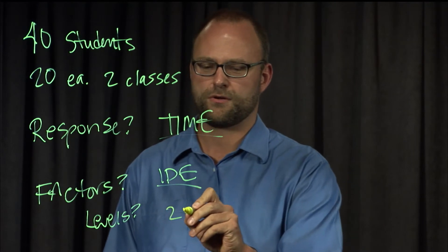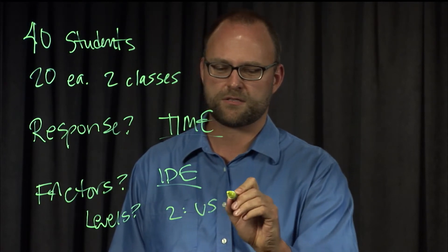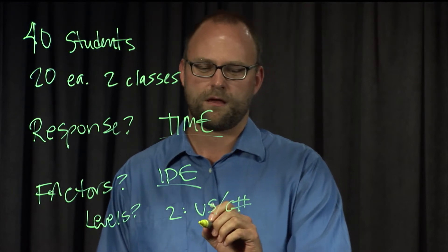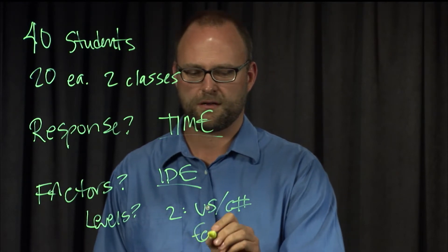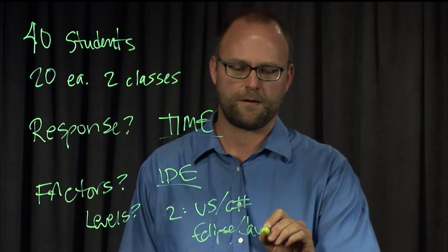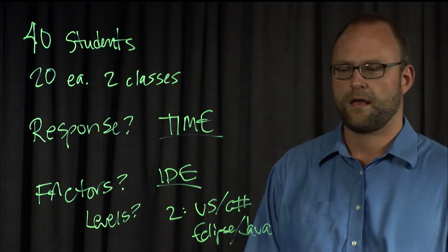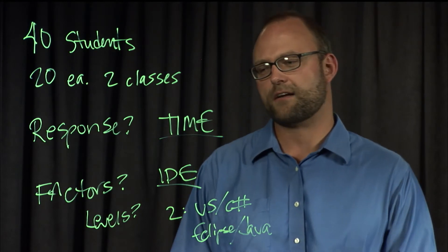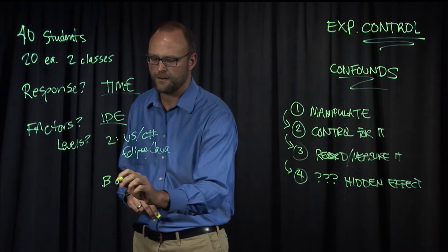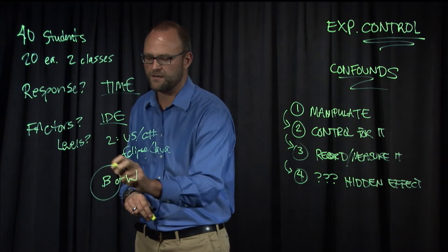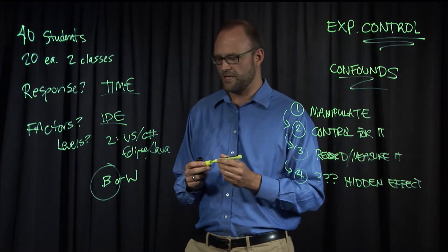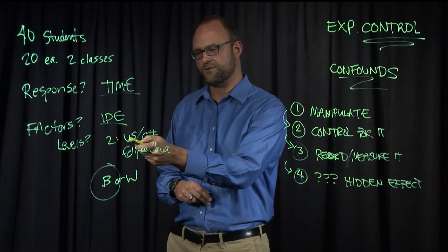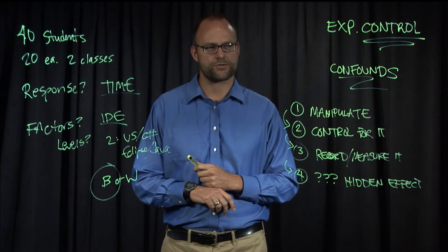Well, so far we have two. We have Visual Studio and C Sharp, and we have Eclipse and Java. And lastly, we can ask, is this factor a between or within subjects factor? And we know that it's between, which means each student only experiences one level of the factor. Each student only uses either Visual Studio and C Sharp or Eclipse and Java. So let's now go to our R code and analyze this data and see if it makes a difference in their task completion time.